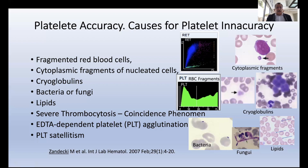Last but not least, severe thrombocytosis is a cause of inaccuracy — not thrombocytopenia but thrombocytosis — where some instruments don't count platelets well at high values. Even if the operations manual states linearity up to one or two million, when you dilute the sample 1:3 or 1:5 and multiply back, you will often not reproduce the first count. This represents a coincidence phenomenon where two or three platelets appear as one because they are too numerous, a known phenomenon since the time of Wallace Coulter and the first automated hematology instruments.